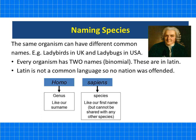In terms of naming species, this is a very useful system. It allows people to describe what organism or species they're looking at. Latin is used because it's not a common language — no nation would be offended. Every organism has two names. Our first name, Homo, is the genus — a bit like our surname. The species name is sapiens — like a first name, but it cannot be shared with any other species. So our binomial name is Homo sapiens.